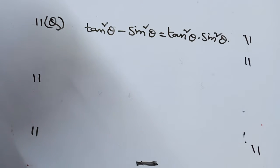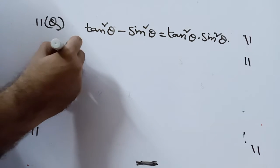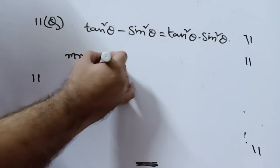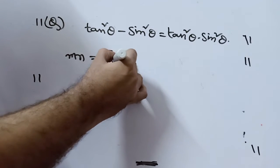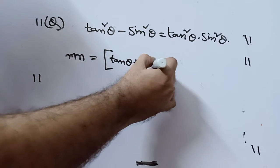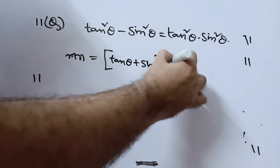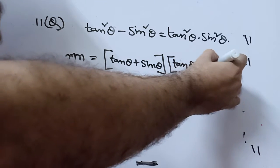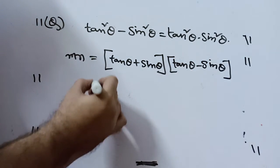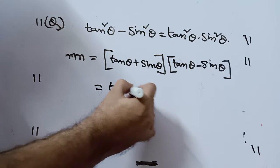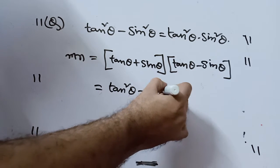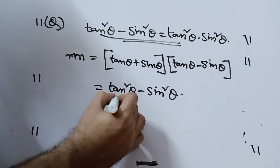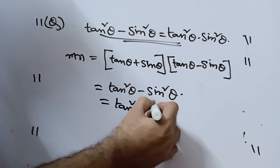Hopefully you have noted. Now we know the relationship. What I do is find m times n. That is tan theta plus sin theta into tan theta minus sin theta. This is nothing but tan square theta minus sin square theta.